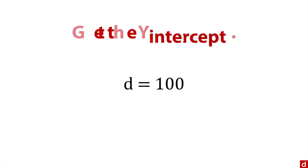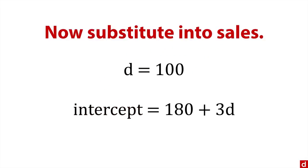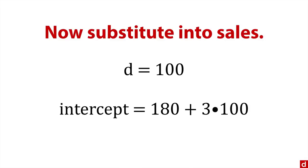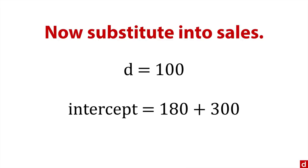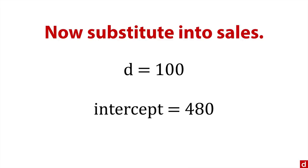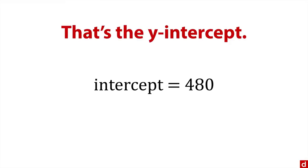That tells us how we can get the y-intercept. We substitute this value into sales. We take D equals 100, and the intercept equals 180 plus 3 times 100, which equals 300. Add those together, and you get 480. That is the y-intercept in our equation. When price is zero, the expected sales is 480. Of course, that's not going to happen in reality, but it's necessary for finding the slope of the line.